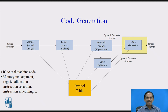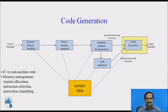In the code generation phase, we generate target code consisting of relocatable machine code or assembly code. Memory locations are selected for each of the variables used by the program. Intermediate code instructions are each translated into a sequence of machine instructions that perform the same task. A crucial aspect is the assignment to registers, where the actual data is stored.